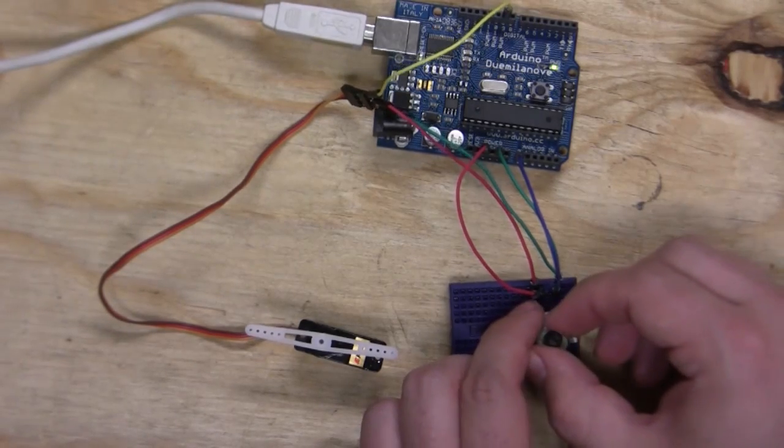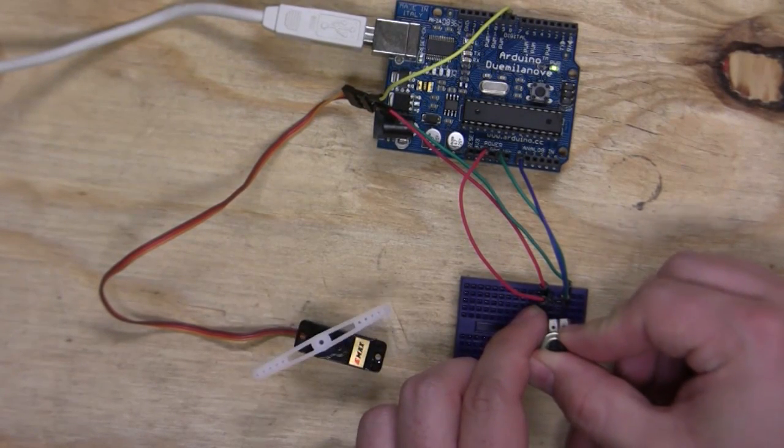Verify the code and upload it to the Arduino. If everything works well, whenever you turn the knob on the potentiometer, the servo should move respectively.